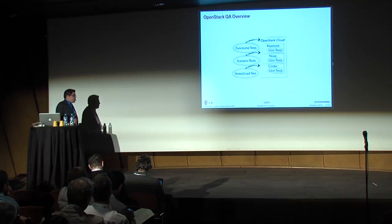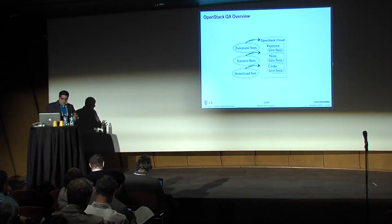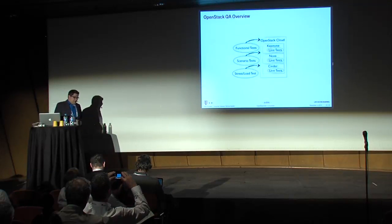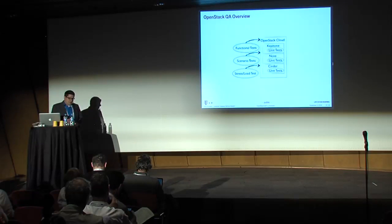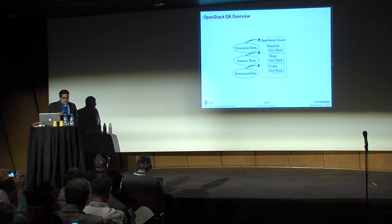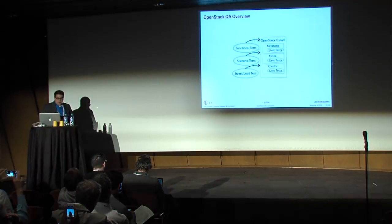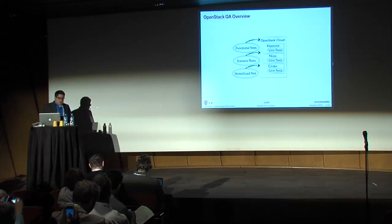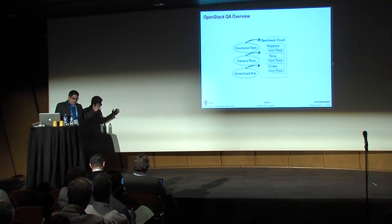We usually build an OpenStack and verify through APIs if it really works. Inside of the projects there are other quality assurance efforts like unit tests — Keystone, for instance, has unit tests inside. Projects also typically have code style checks and similar things. We usually want a running cloud and verify against it.